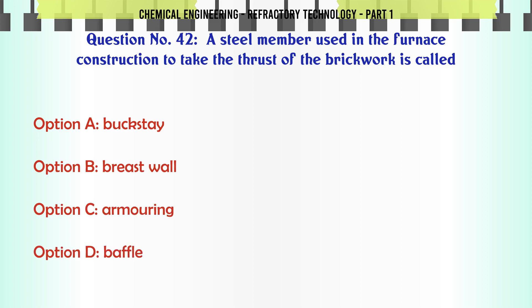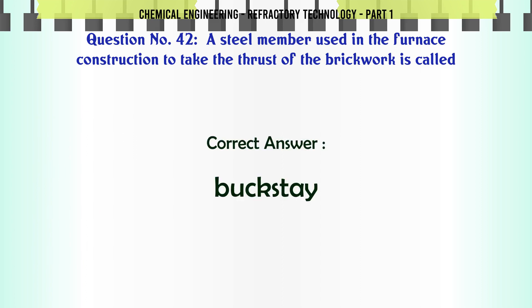A steel member used in furnace construction to take the thrust of the brickwork is called: A. Buckstay, B. Breast wall, C. Armoring, D. Baffle. The correct answer is Buckstay.